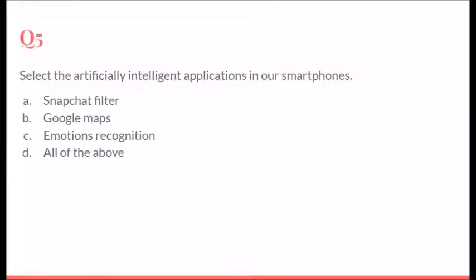Select the artificially intelligent application in your smartphone. So Google Maps, yes it uses AI. Snapchat filter, yes it uses AI. So let's go for all of the above in that case, although emotional recognition system was also part of artificial intelligence.